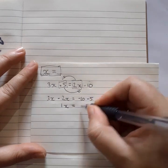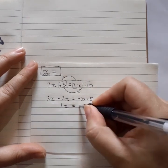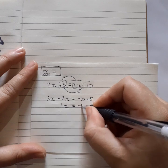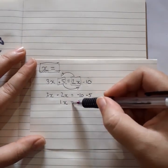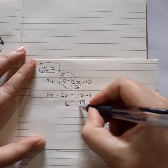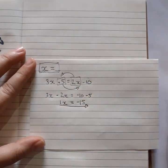And here we've got negative 10 minus 5 is negative 15. Okay, so x equals negative 15. And that's our answer.